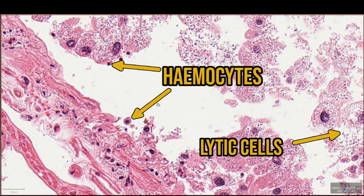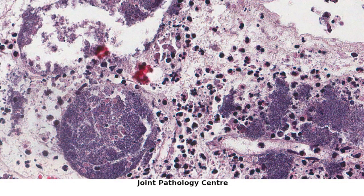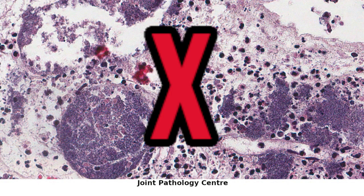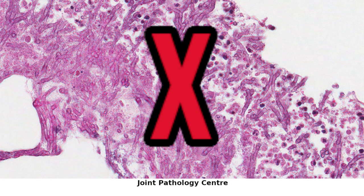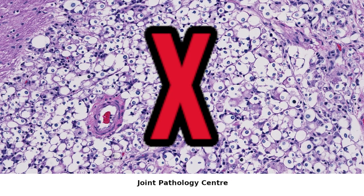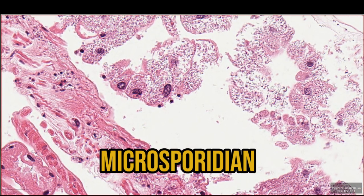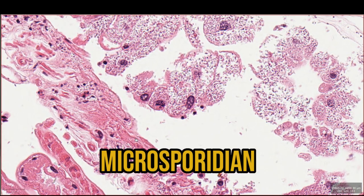There are even a few haemocytes — the caterpillar's inflammatory cells — in the mix trying to get a handle on things. The purple-black dots are an organism of some sort. They're too big to be bacteria and it's not a virus. It's not a fungus or a yeast. I've settled on a tentative identification of a microsporidium intracellular parasite — more on that later.